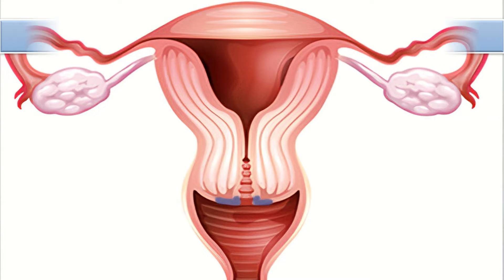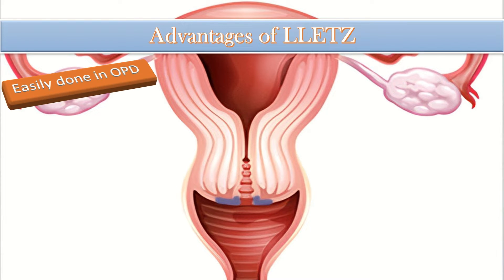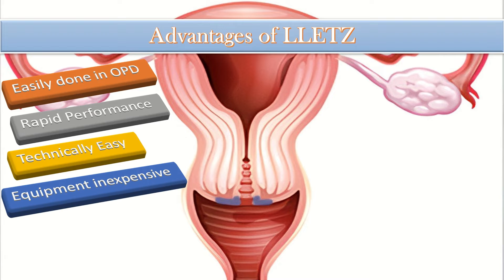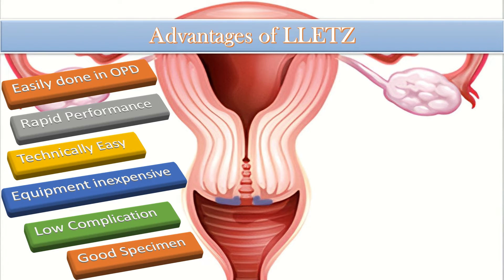What are the advantages of large loop excision of the transformation zone? First, this procedure can easily be done in an outpatient department. Secondly, rapid performance. Thirdly, it is technically easy. Fourthly, the equipment required is inexpensive. It also has a low complication rate, and importantly, a good tissue specimen is obtained.